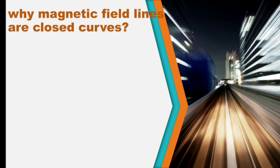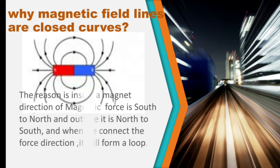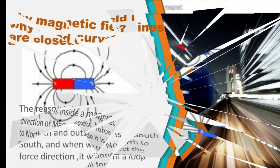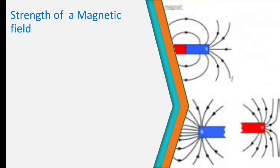Why are magnetic field lines closed curves? Inside a magnet, the direction of magnetic force is from south to north, and outside it is from north to south. When we connect these force directions, they form a loop — that is why magnetic field lines are closed curves.